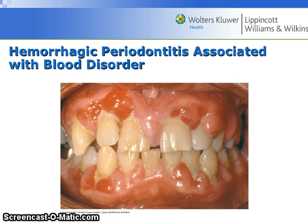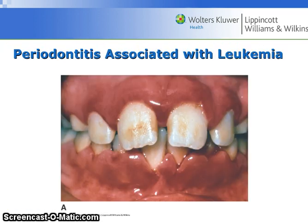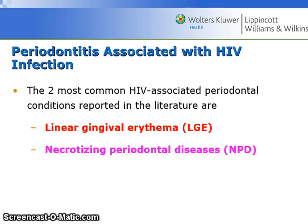Here is an image of a hemorrhagic periodontitis associated with PMN deficiency. The primary dentition is being lost and the permanent dentition is being exfoliated as soon as the permanent teeth erupt. This is an image of periodontitis associated with leukemia. Here's another image. Periodontitis associated with HIV infection.